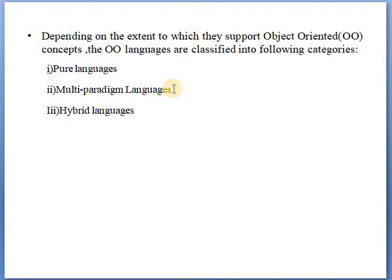Multi-paradigm languages are languages that support many programming paradigms. There are different programming paradigms like procedural programming, generic programming, and structural programming. Languages that support many programming paradigms, one of which is the object oriented paradigm, are called multi-paradigm object oriented languages. C++ is an example of a multi-paradigm object oriented language.